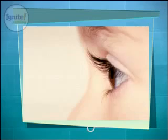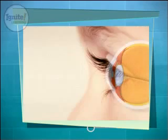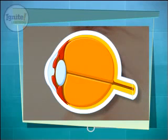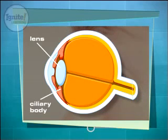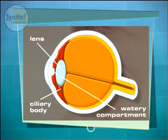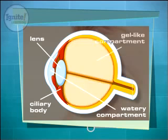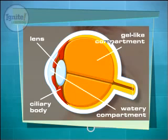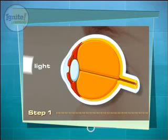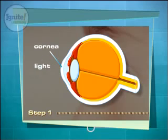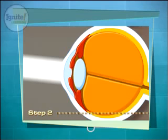Here's how it works. The eye is broken into two compartments that are separated by the lens and the ciliary body: a watery compartment in the front of the eye, and a compartment filled with a gel-like material in the larger rear area of the eye. When light first enters the eye, it passes through the cornea, a fixed lens, which refracts or bends the light. Next, the light crosses the watery compartment and passes through the pupil.